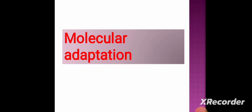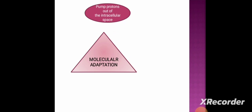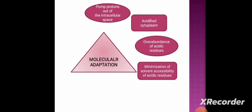These molecular adaptations involve DNA, RNA, proteins, and lipids, keeping them stable and functional at highly acidic, low pH conditions. The molecular adaptations are: (1) pumping protons out of their intracellular space; (2) acidified cytoplasm; (3) over-abundance of acidic residues; (4) minimization of solvent accessibility of acidic residues; and (5) binding of metal cofactors.